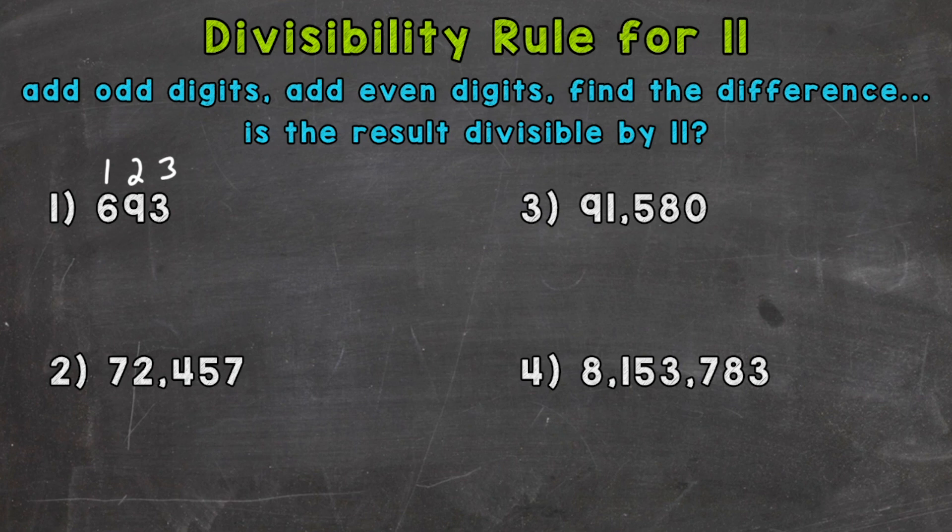6 and 3 are the odd digits, and 9 is the even digits. So let's add our odd digits. 6 and 3, I'll put odd equals 6 plus 3 is 9. And even, well, we just have one digit, and it's a 9.